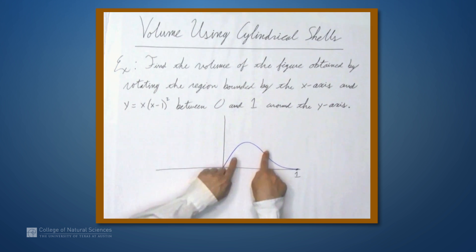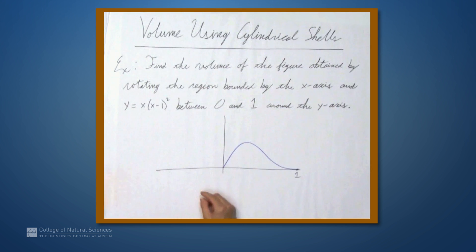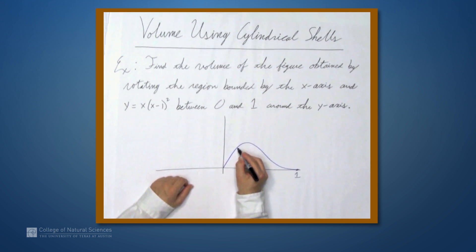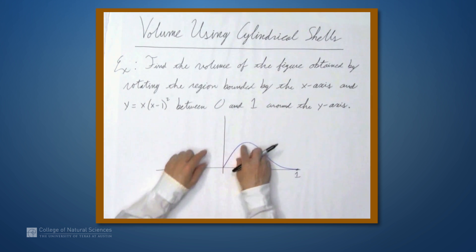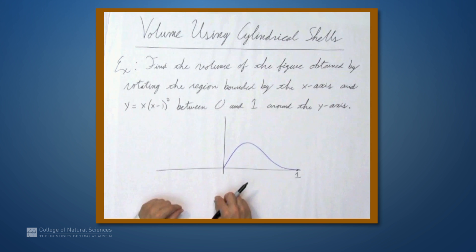So we're rotating this thing around the y-axis. Now, using the technique we already know, we would end up with a disk, excuse me, not a disk, a ring. We'd draw a little rectangle here, and this would get rotated around the y-axis, and this would form a ring. And we'd integrate a bunch of those rings to find the volume.